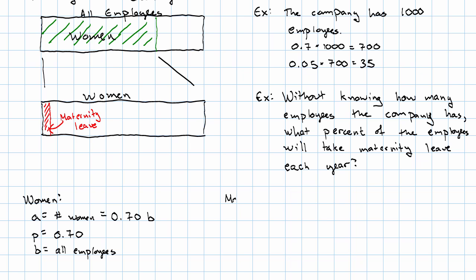Now for those on maternity leave, I'm just putting those little tick marks on the letters, because this A, P, and B are different from this A, P, and B. For the maternity leave story, the base is the number of women, which we said earlier was 0.70 times the earlier base. The percent is that 5%.